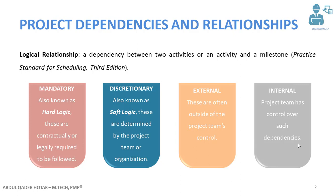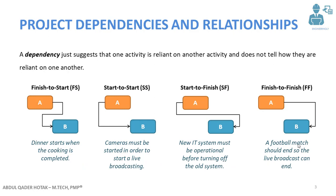External dependencies are those which are out of the project team's control — the project team has no or very little control over such dependencies. For internal dependencies, they are totally under the project team's control and the team can decide about them.